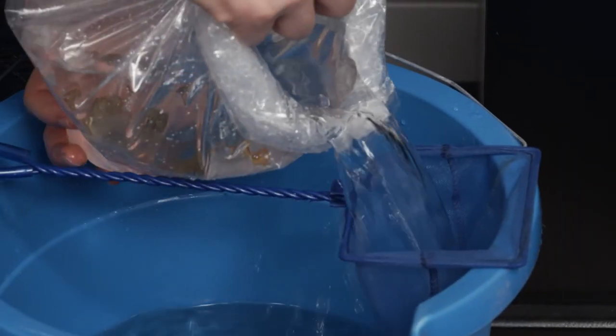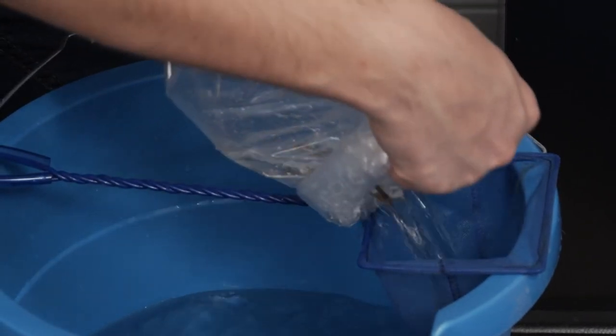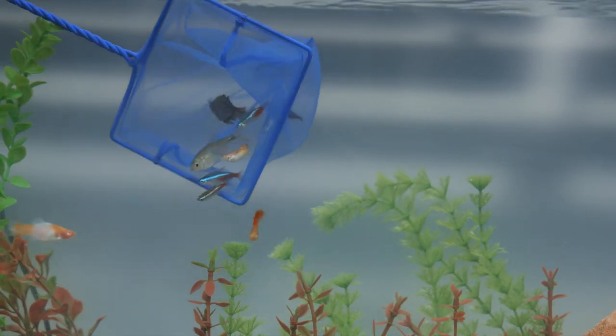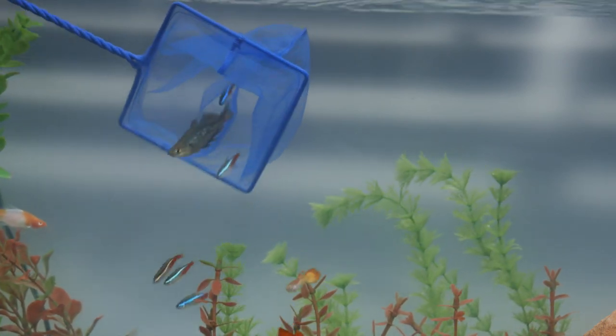Finally, to transport your fish from the bag to your tank, gently pour the bag through a net over a bucket. Then place the net into your tank and allow the fish to swim out on their own.